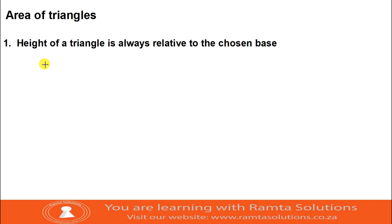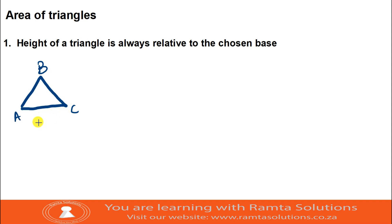One rule you should know is that the height of a triangle is always relative to the chosen base. I'll just choose any triangle - let me reduce the size. I'll choose triangle ABC. If I choose my base to be AC, my height will be this one here. Remember, for a triangle, height is always perpendicular to the base.